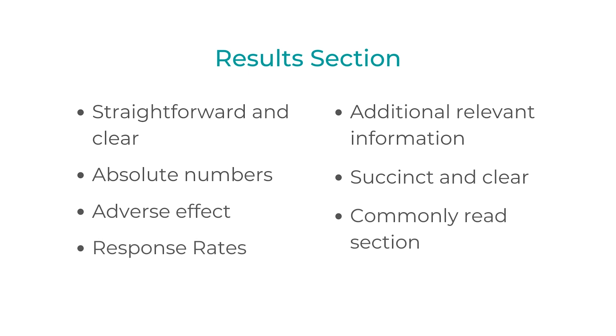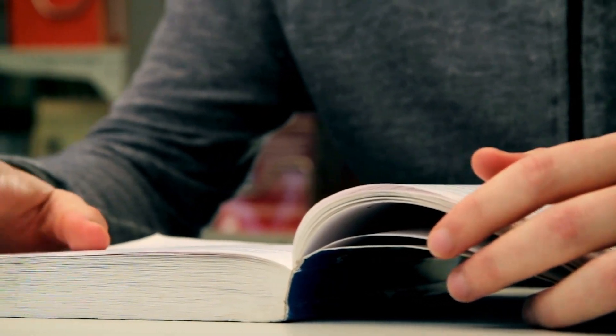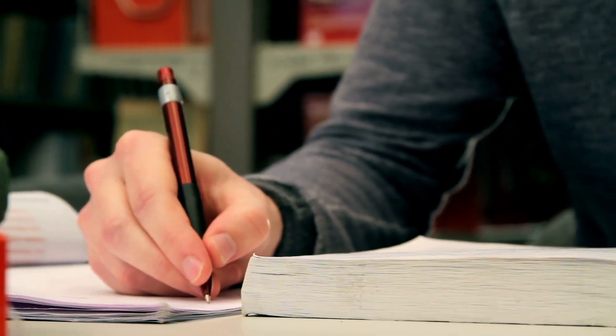For the Results section, the AMA encourages you to include your most significant results as straightforwardly and clearly as possible. This part is often going to take up more of your 350 words than other sections. Being clear means including the sample you analyzed, absolute numbers for quantitative values — not just p-values that estimate deviation from hypotheses — measures of statistical certainty where relevant, any adverse effects, response rates, and other relevant information. Remember, not everyone is going to read through to the article, but interested researchers are fairly likely to remember what's in your results section, so it's important to be clear and accurate.